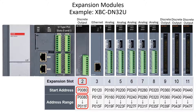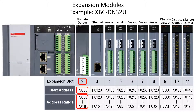In the configuration shown with an 8-point relay module in slot 2, the discrete bit addresses are P word 8 bit 0 through P 8 bit 7. If an input module were installed in slot 2, the first input would also be P 8 bit 0.